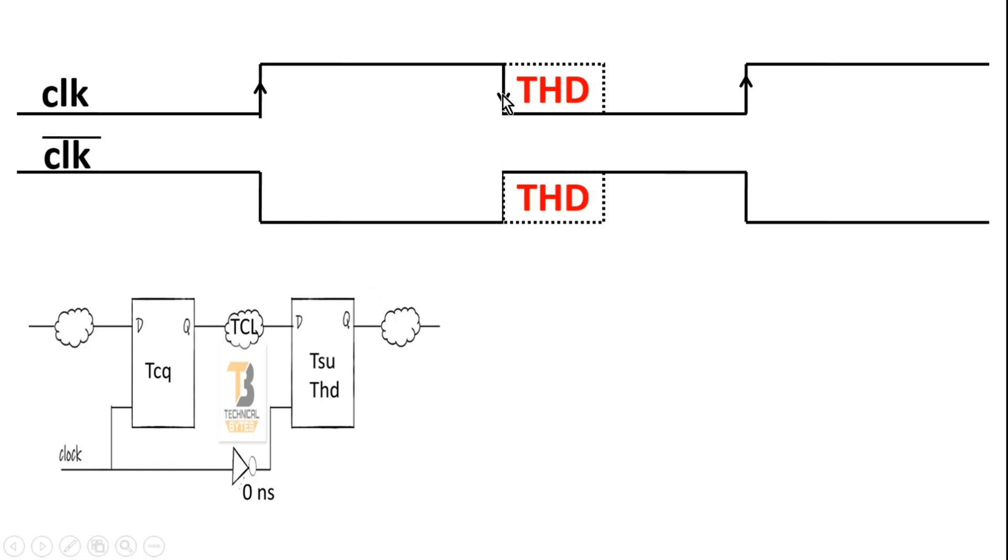Now, what will happen on this negative edge? On this negative edge, the second flip-flop will start transmitting its input value to its output. But on the same negative edge, flip-flop 1 is not doing anything. It is not transmitting its input value to its output.